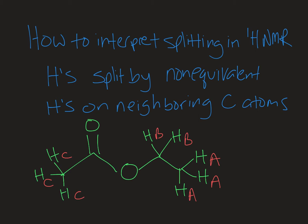There are three unique protons in this molecule drawn below, labeled A, B, and C. Protons on neighboring carbon atoms will split one another by a rule called the N plus 1 rule. We'll go to the next slide, redraw this molecule, and take a look at what our signals should look like.